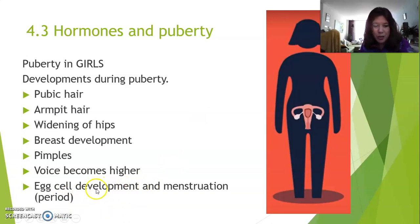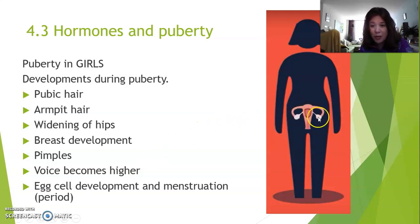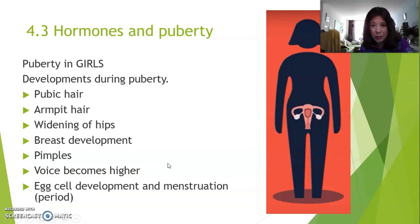I want you to focus on the word development. It's very important to realize that in boys, sperm cells are produced starting from puberty. But in girls, egg cells are not produced starting from puberty — because girls are already born with all of their egg cells in their ovaries. Even before birth, a female fetus already has these egg cells. But starting from puberty, these egg cells develop one by one every month. So remember: sperm cells are produced, egg cells develop.